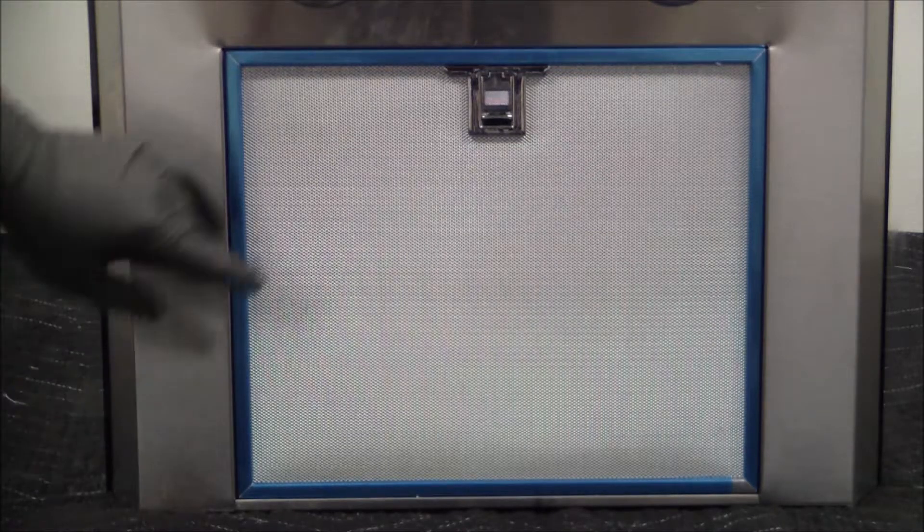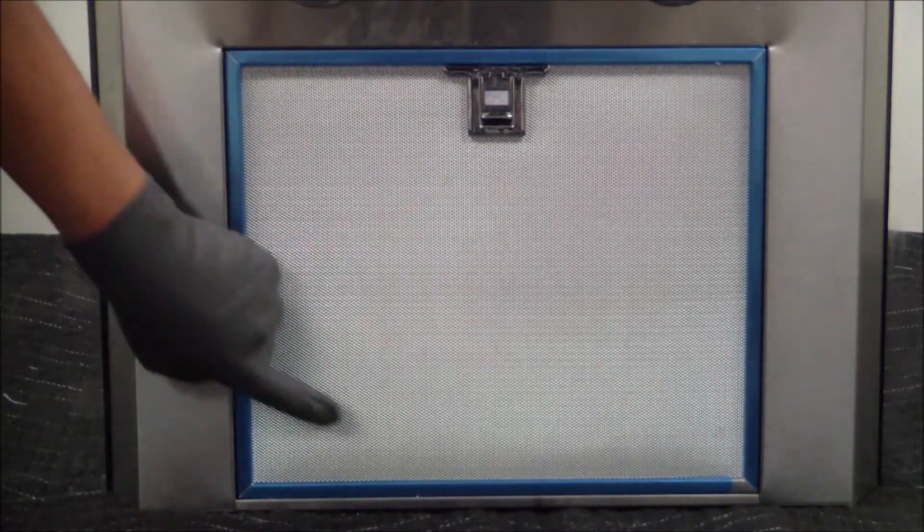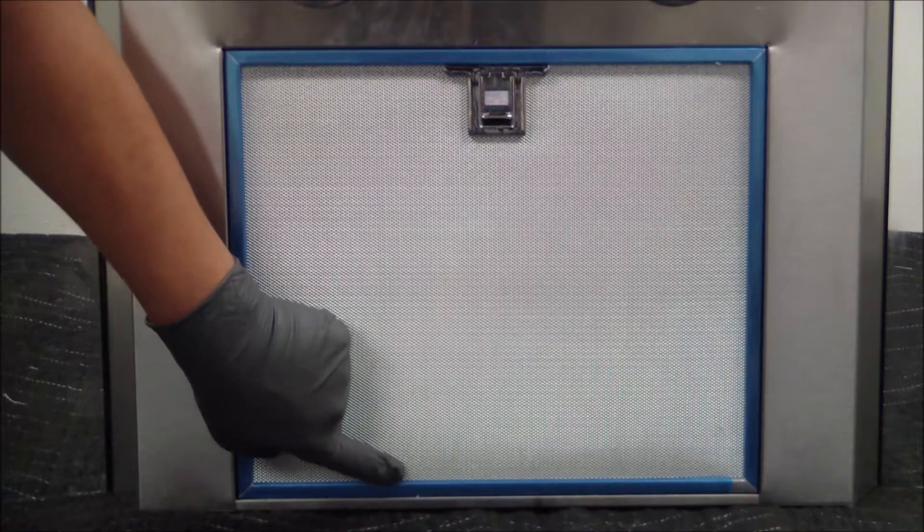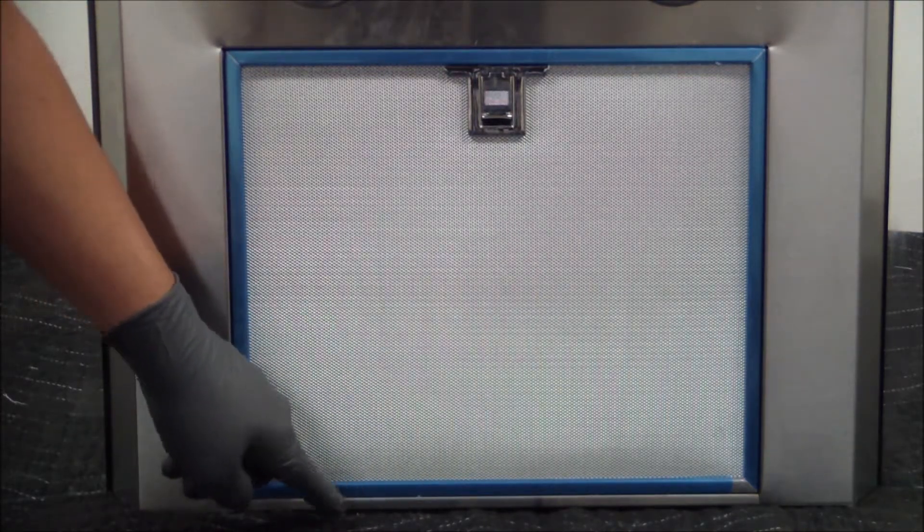We're going to begin by locating the latch, which is right here. Before we take it off, there are teeth that are sitting on the filter that are built in. These sit in the inside grooves that are cut out on the stainless steel body.